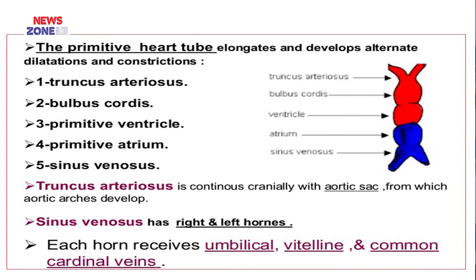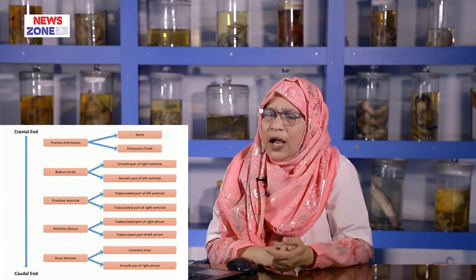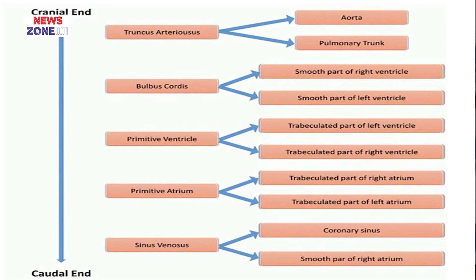The truncus arteriosus continues with the aortic sac, from which the aortic arch is developed. The sinus venosus has two horns, and each horn receives three veins: umbilical vein, vitelline vein, and the common cardinal vein. The derivatives: truncus arteriosus gives the aorta and pulmonary trunk; bulbus cordis gives the smooth part of both ventricles; primitive ventricle gives the trabeculated part of both ventricles; primitive atria gives the trabeculated part of both atria; sinus venosus gives the coronary sinus and smooth part of the right atrium.